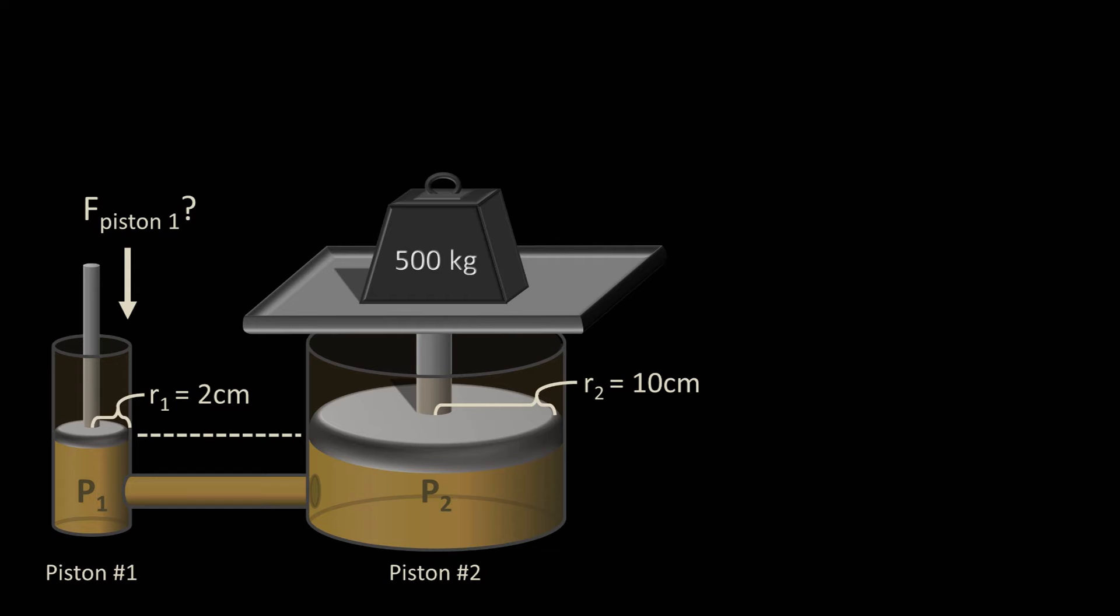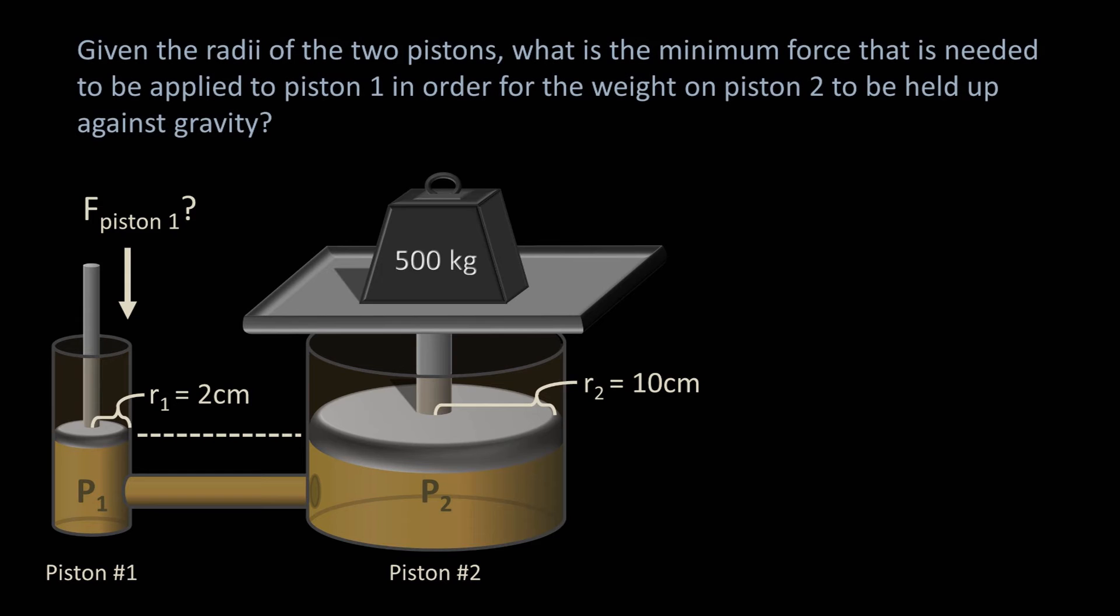Inside the pistons and tube, instead of water, we'll have some type of oil. Given the radii of the two pistons, what is the minimum force that is needed to be applied to piston 1 in order for the weight on piston 2 to be held up against gravity?